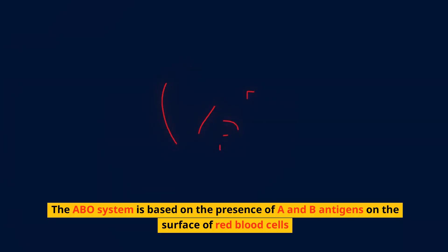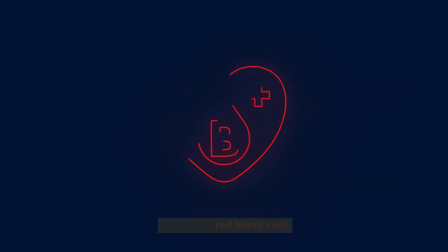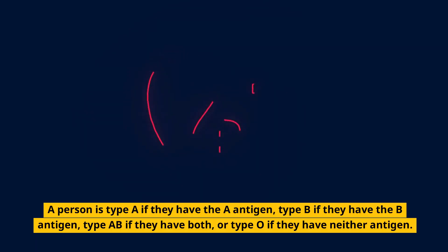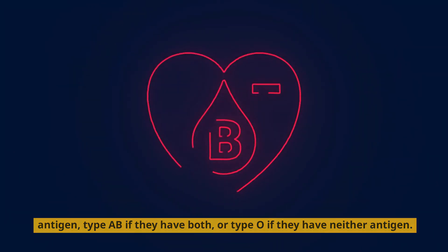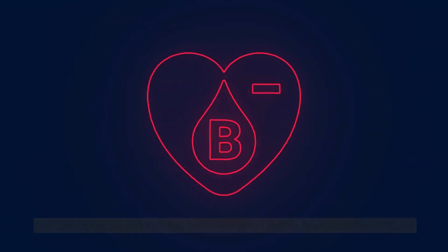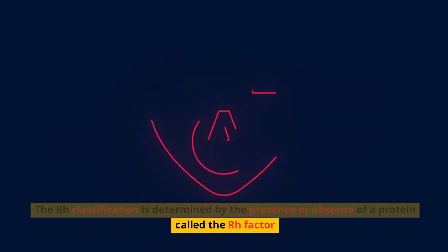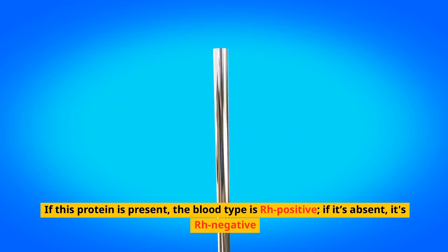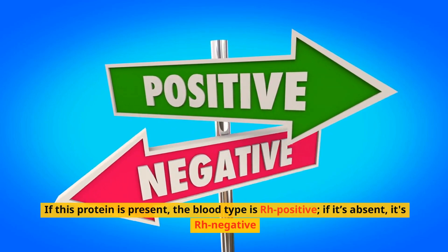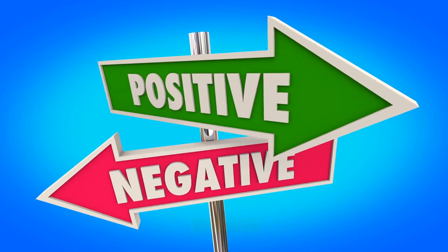The ABO system is based on the presence of A and B antigens on the surface of red blood cells. A person is type A if they have the A antigen, type B if they have the B antigen, type AB if they have both, or type O if they have neither antigen. The RH classification is determined by the presence or absence of a protein called the RH factor — if present, the blood type is RH positive; if absent, it's RH negative.